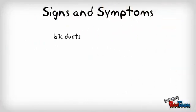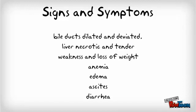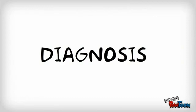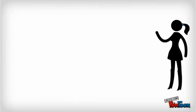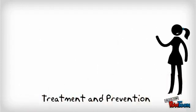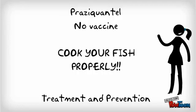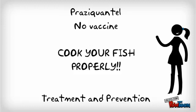Symptoms include bile duct dilation and deviation, liver necrosis and tenderness, weakness and loss of weight, anemia, edema, ascites, and diarrhea. Diagnosis is by examination of eggs in the feces or duodenal aspiration. Treatment of choice is praziquantel. Preventative measures include adequate cooking of fish and proper disposal of human waste.